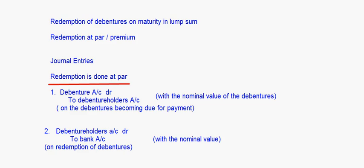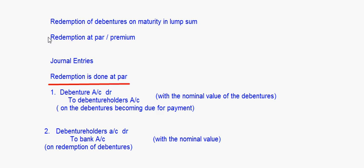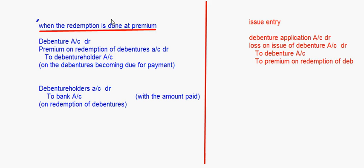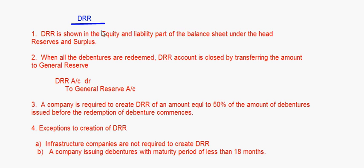In today's session we have broadly seen what is redemption of debentures, and covered the case of redemption on maturity in lump sum. We've seen journal entries for redemption at par and at premium, redemption out of profits and out of capital, and the main points about the Debenture Redemption Reserve. That brings us to the end of this session.